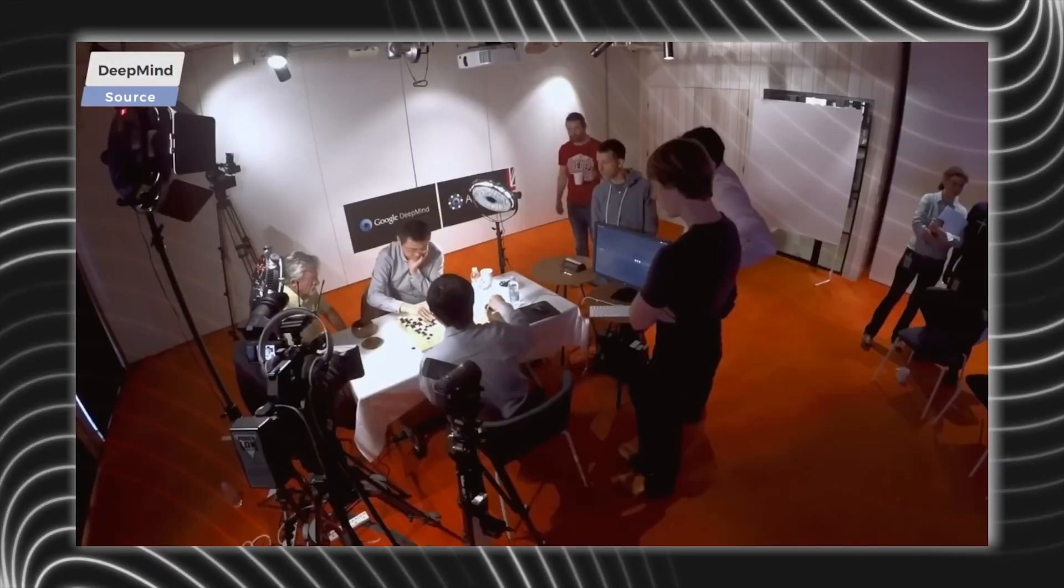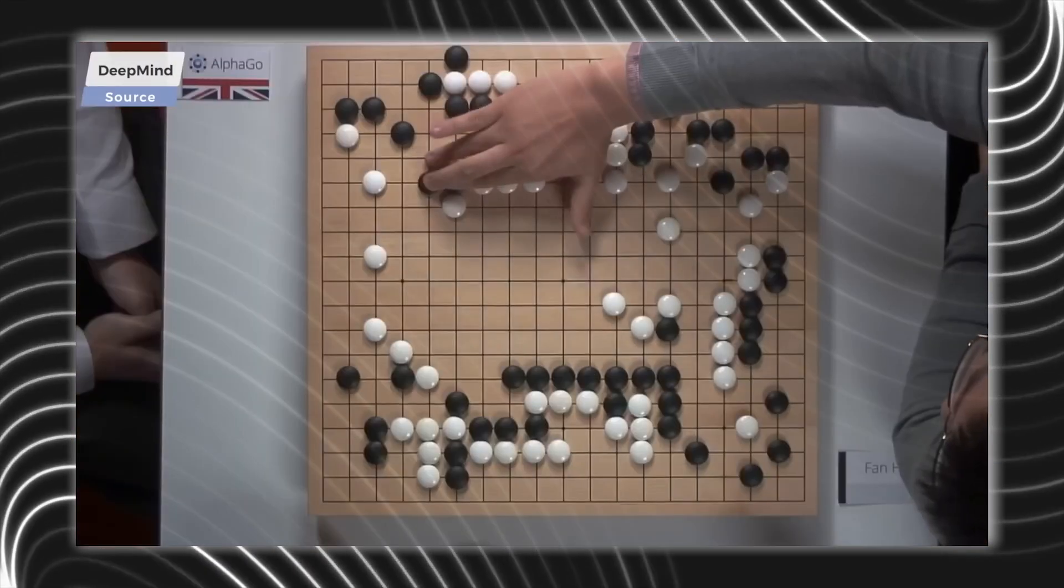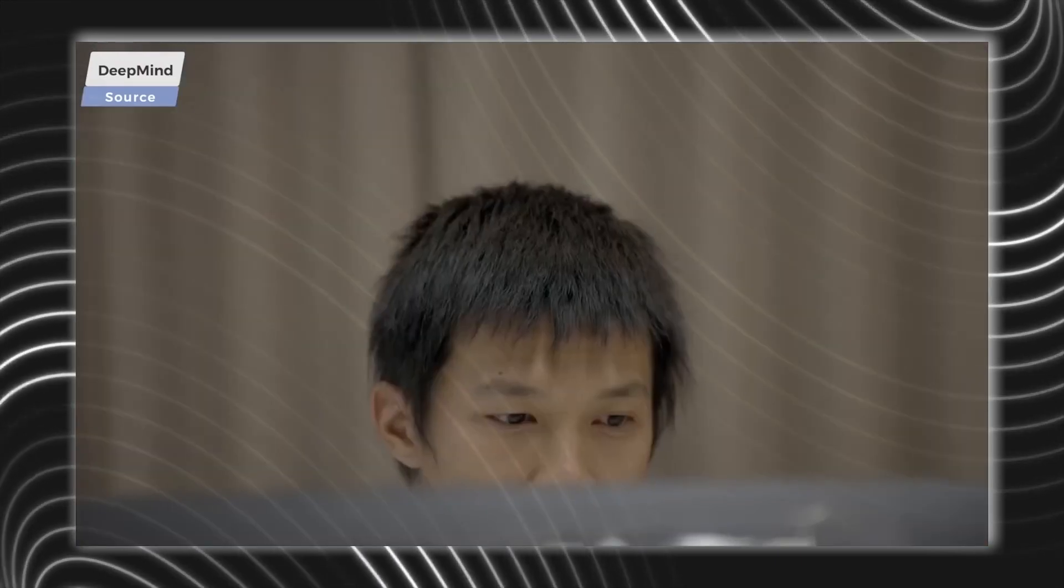These include board games like Chess, Go, and Mahjong. But they even went a step further and included video games on the Atari 2600.